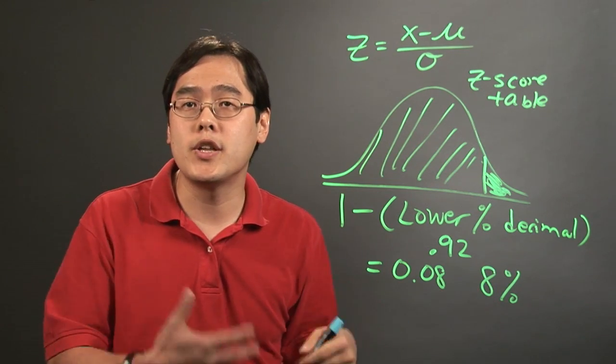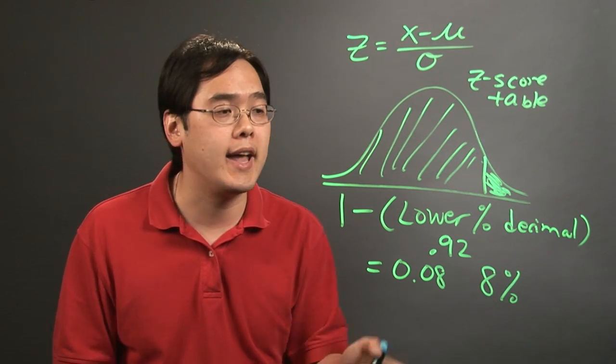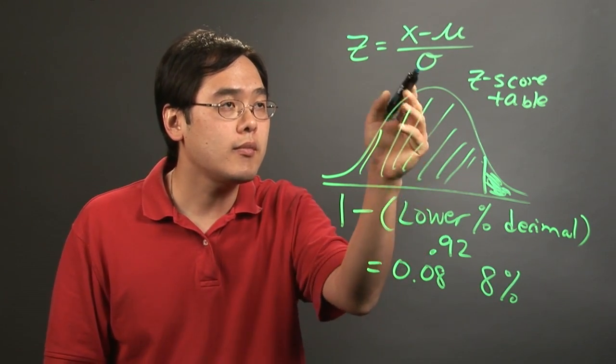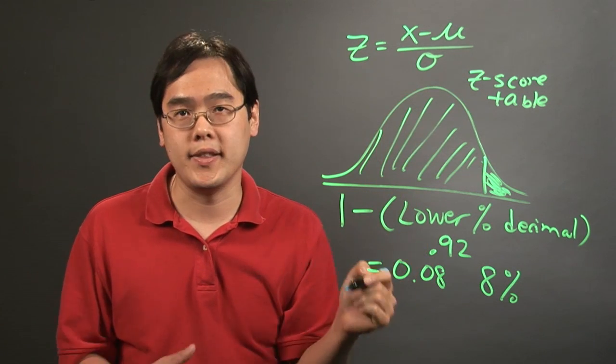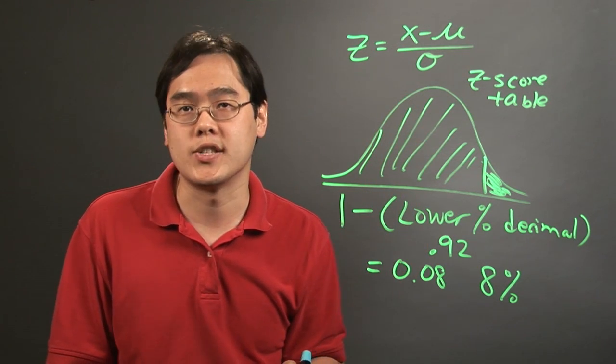It really depends on the distribution that you have. Once you have that, find the appropriate score, and then it'll give you the percentage, and you subtract from 1 if necessary.